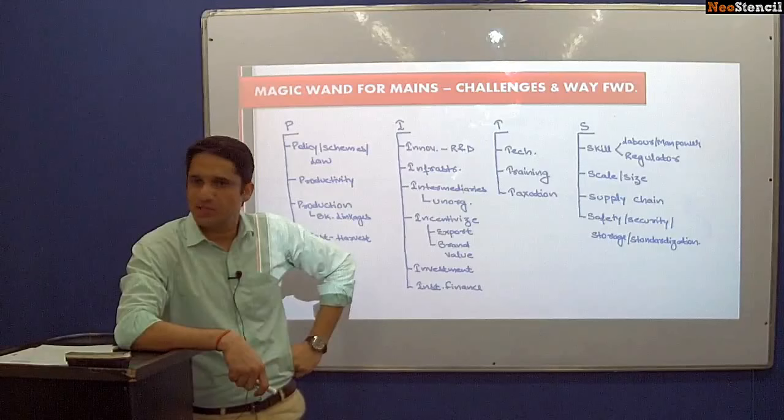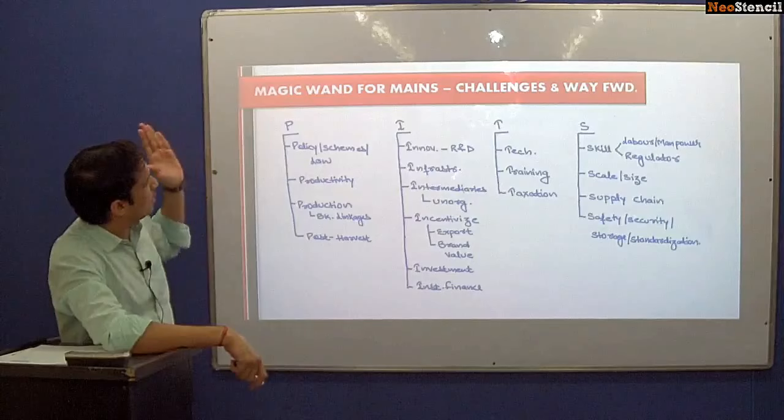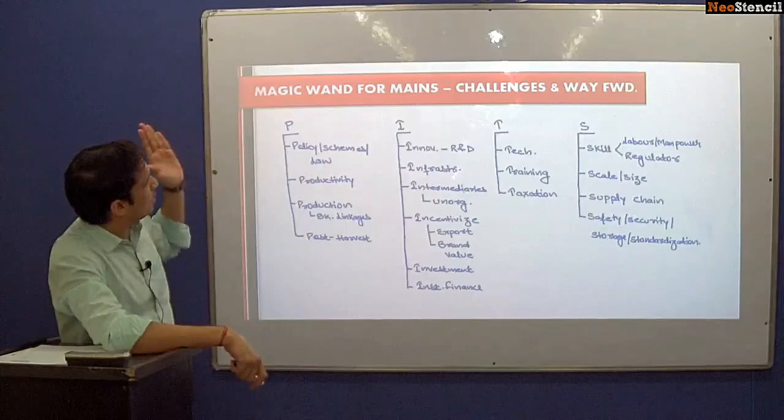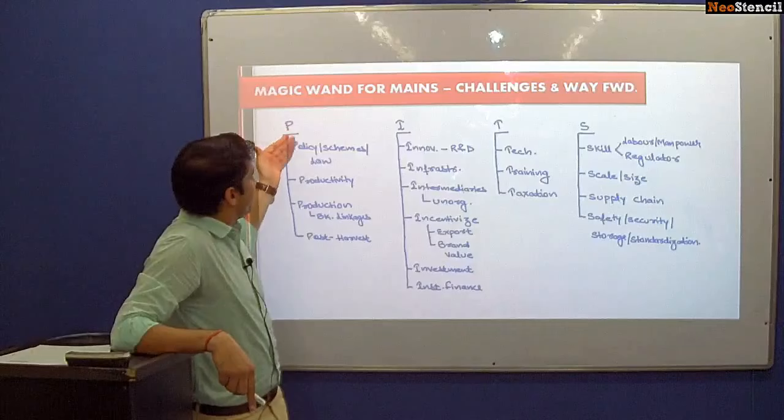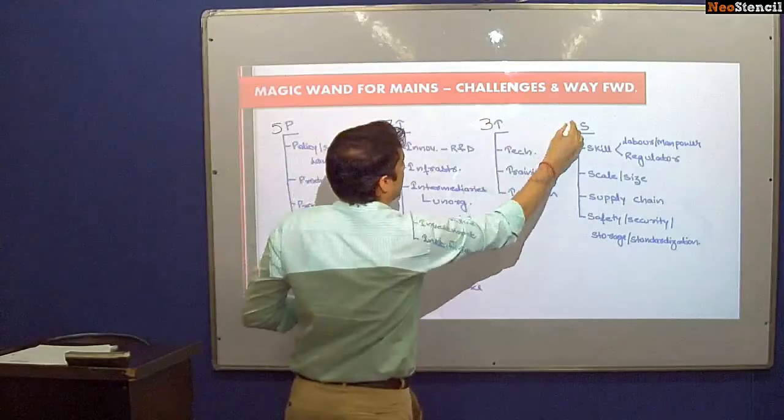Whatever the question is related to challenges or you have to write the way forward, we just have to remember these 20 pointers. These 20 pointers are split into: if we have more challenges there will be pits. So we have 5P, then 7I, 3T and 5S — totally 20 dimensions. We can use these 20 dimensions in any question.